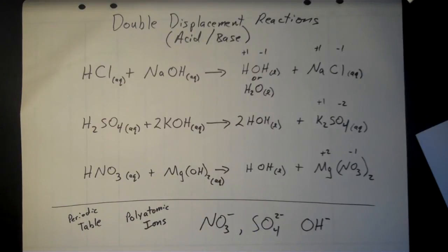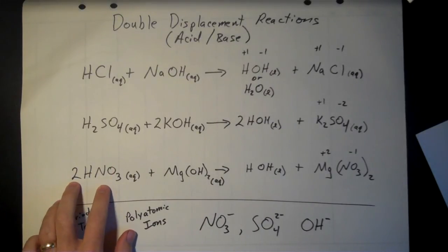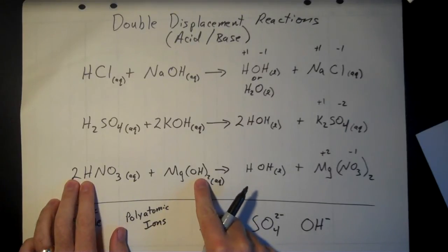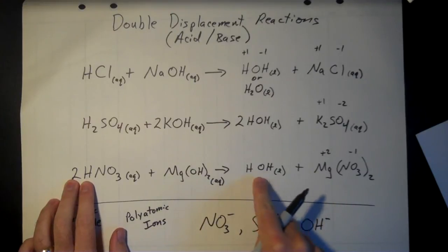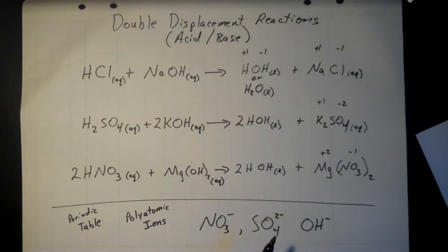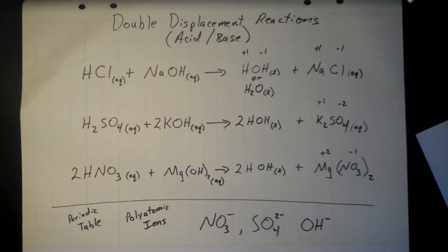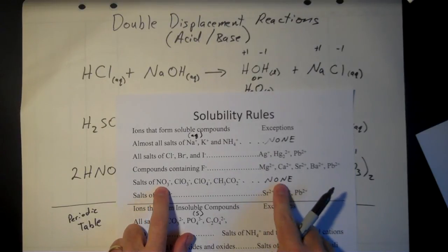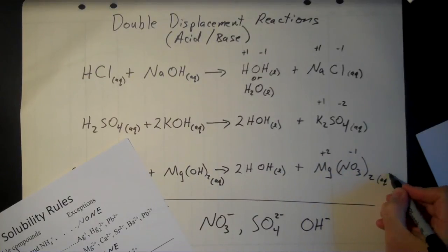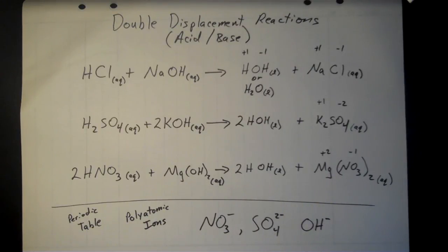To balance the equation, do hydrogens and oxygens last. One magnesium each side is already set. There are two nitrates in Mg(NO₃)₂ but only one nitrate in HNO₃, so put a 2 in front of HNO₃. That gives four total hydrogens on the reactant side, so put a 2 in front of the water to balance. Nitrate salts are always aqueous — no exceptions — so magnesium nitrate is aqueous. You do want to check those solubility rules, because sometimes a combination can give you a salt that will precipitate out.